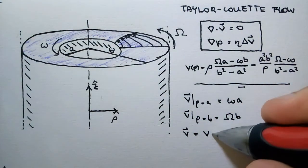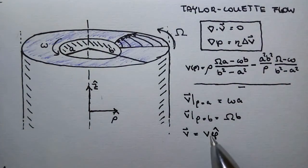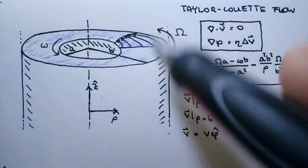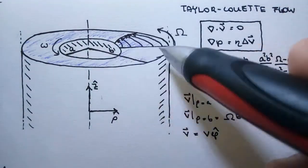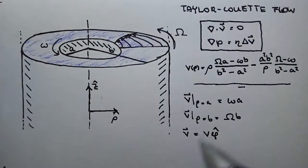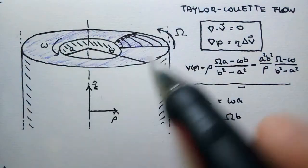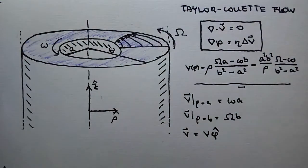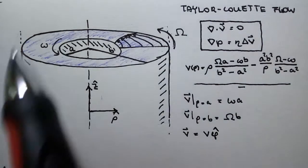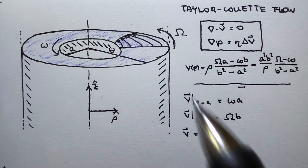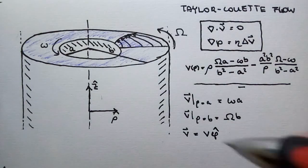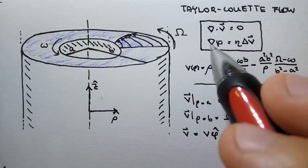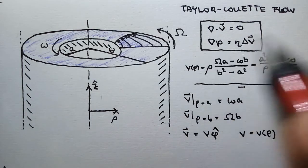Next, we assume a special form of the velocity field. Because of symmetry, we don't need a component in the z-direction or the ρ-direction — we neglect those. In a steady laminar flow with small velocities, no turbulence and no vortices, the only remaining term is v in the φ-direction, and v is a function of ρ only. We substitute this into the Stokes flow formula.